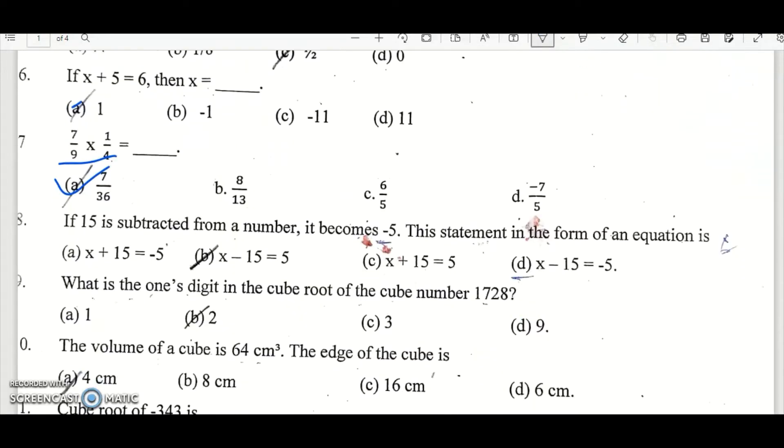Question number 8. If 15 is subtracted from a number, it becomes minus 5. Give this statement in the form of an equation. So if 15 is subtracted from a number, let's say number is x. So if 15 is subtracted from a number, what's the result? It is minus 5. So the answer is option D is the right answer.